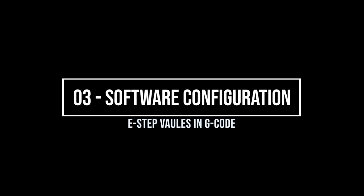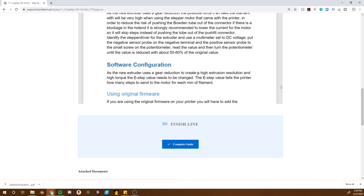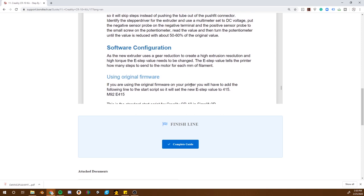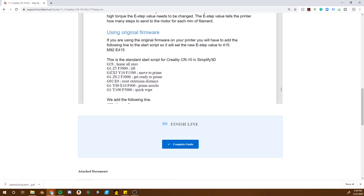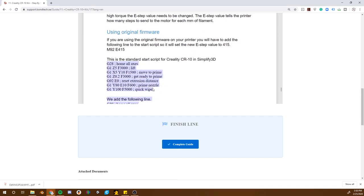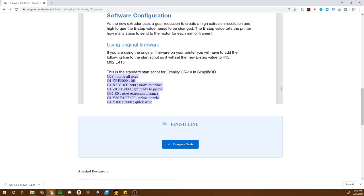Now it says the extruder, the new extruder uses gear reduction to create a high extrusion resolution and high torque. The E-step value needs to be changed. The E-step value tells the printer how many steps to send to the motor for each millimeter of filament. So this is the original start script for the CR10 when using Simplify3D, which I luckily have. It says if you're using original firmware, which I am on my 3D printer on the CR10, you will have to add the following line to the start script. So it will set the new E-step value to 415. M92, E415.